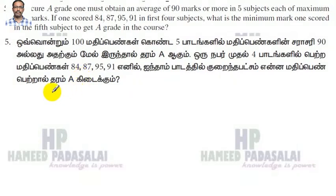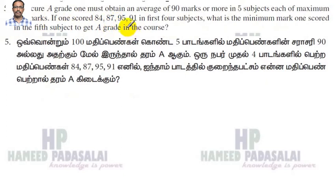We are going to discuss sum number 5 from exercise 2.3. In order to secure a grade A, one must obtain an average of 90 marks or more in 5 subjects, each with a maximum of 100 marks. If one scored 84, 87, 95, and 91 in the first 4 subjects, what is the minimum mark one must score in the 5th subject to get a grade A?